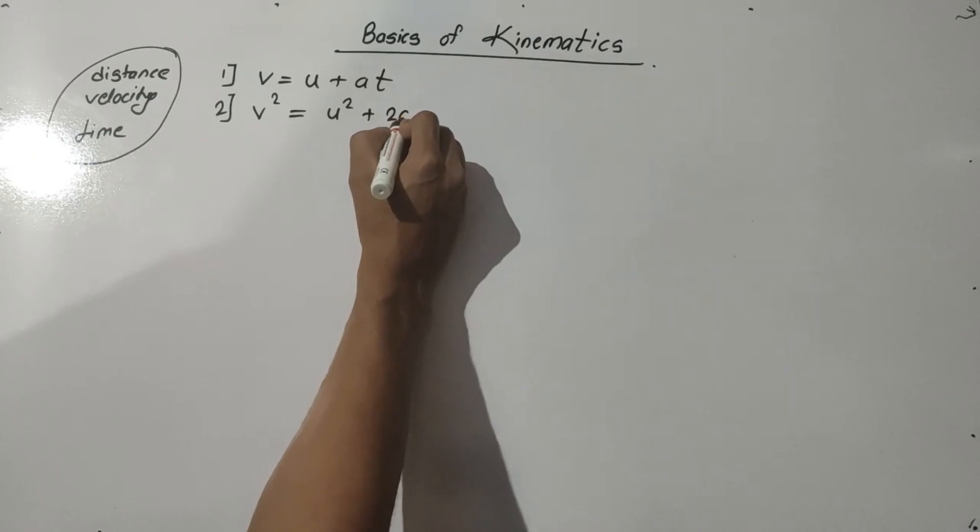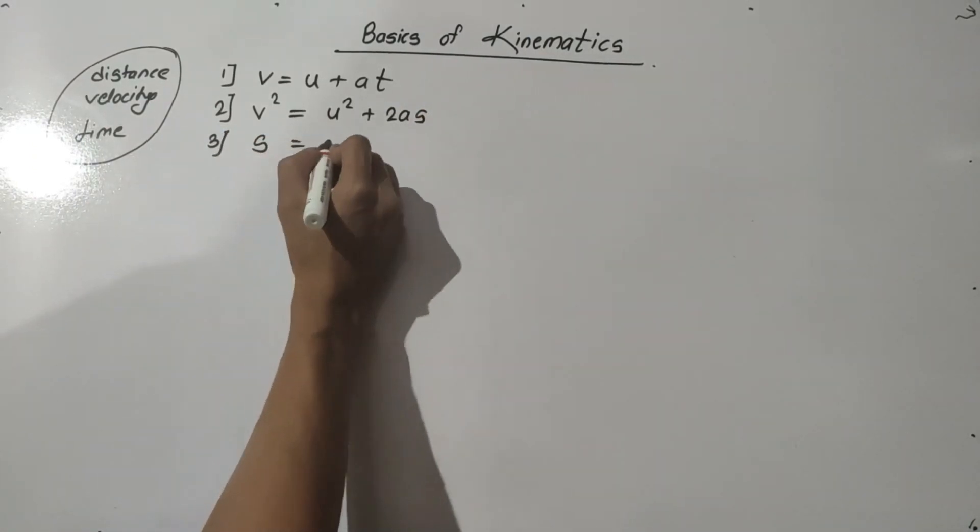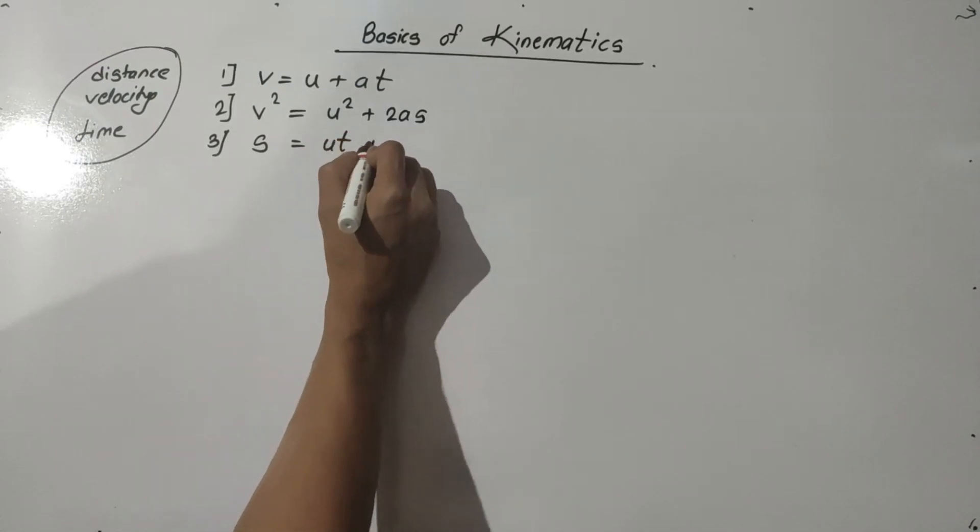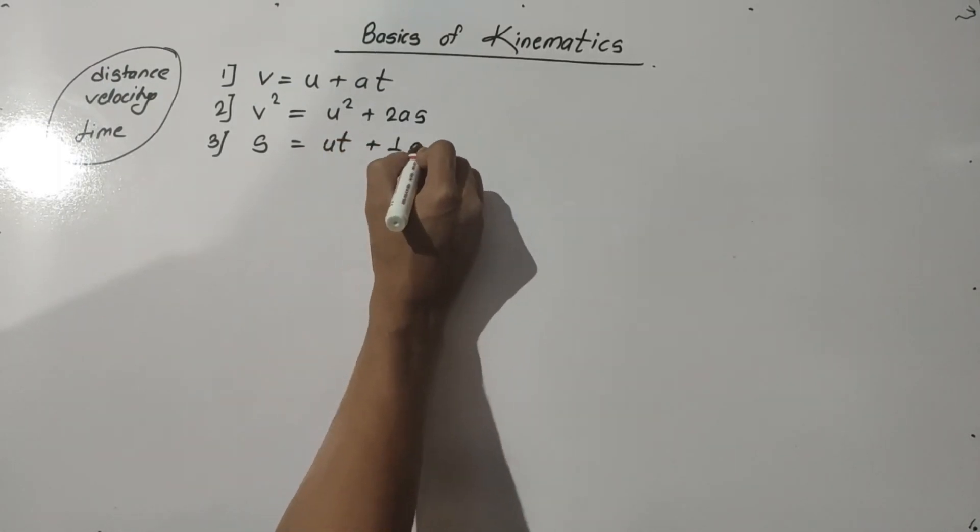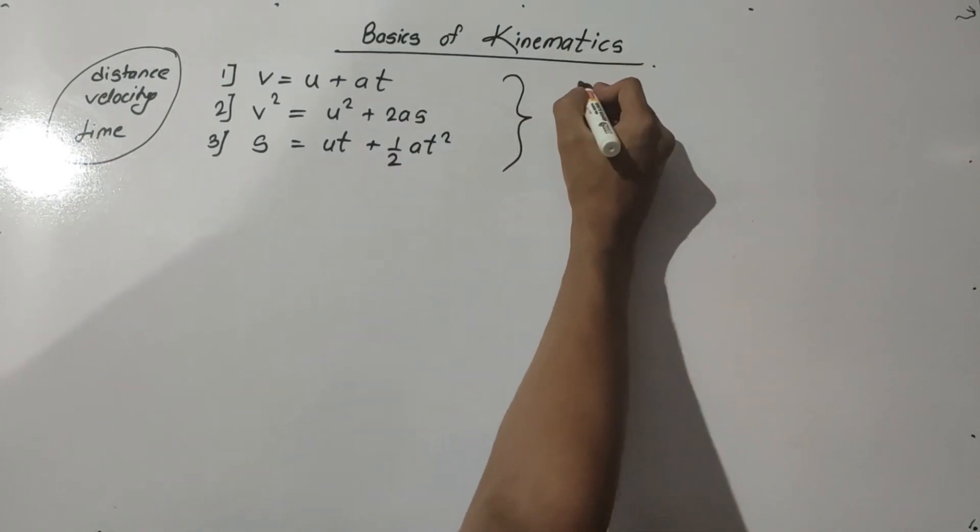And the third one is S equals UT plus half AT square.